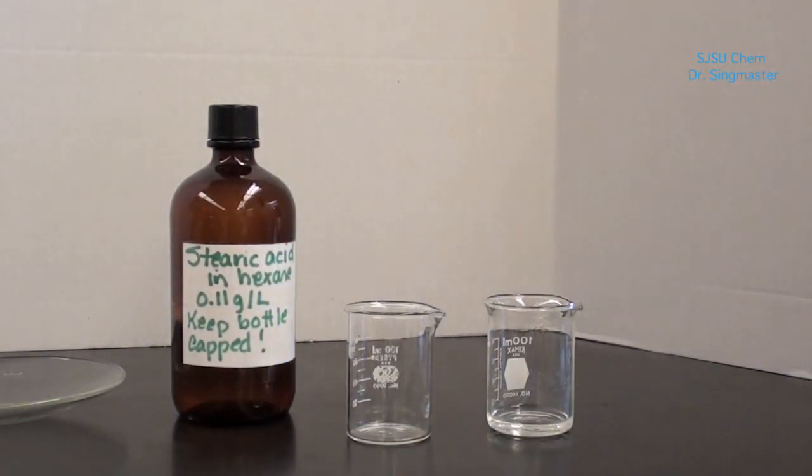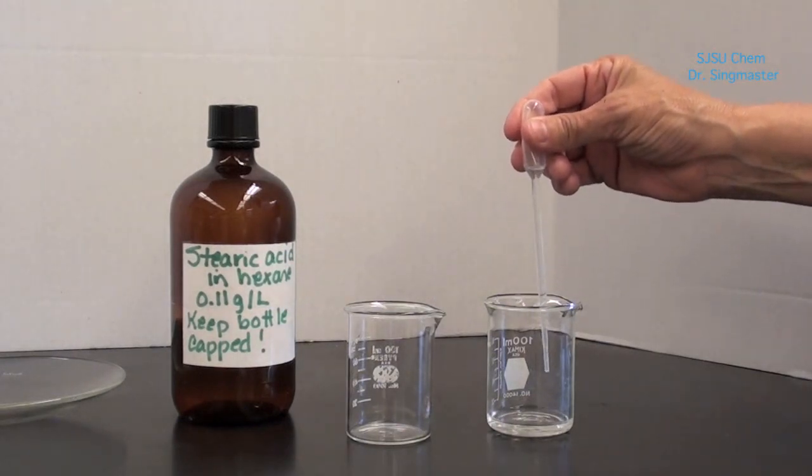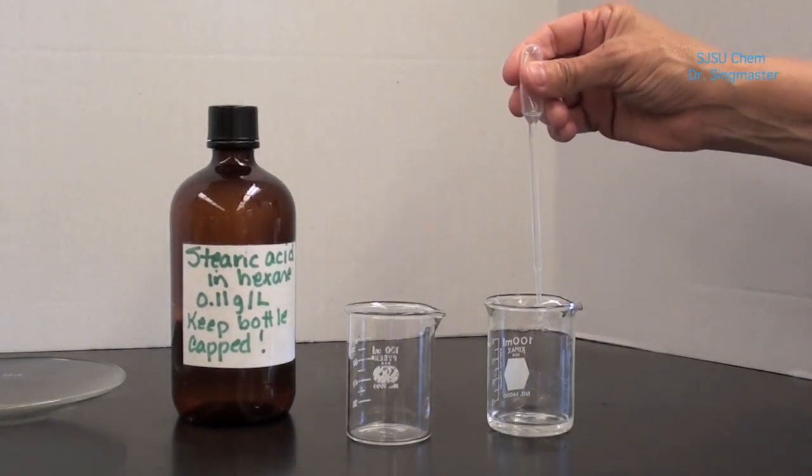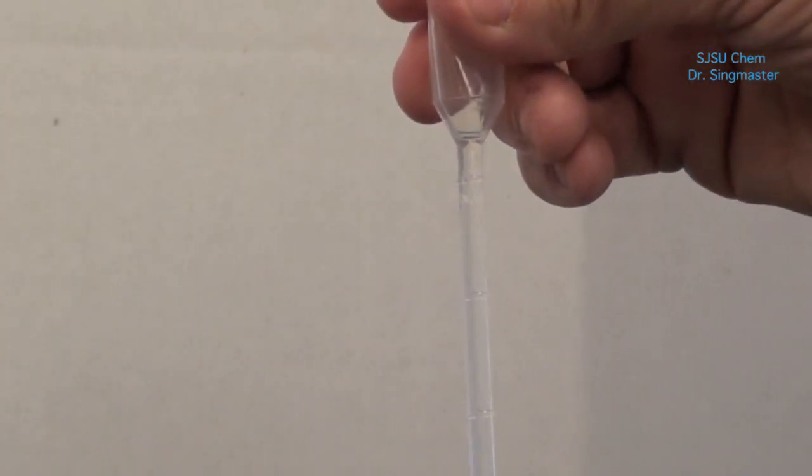We're going to fill a pipette to the one ml level and then start dropping the drops in the other beaker. Make sure to count the drops as they fall into the second beaker.